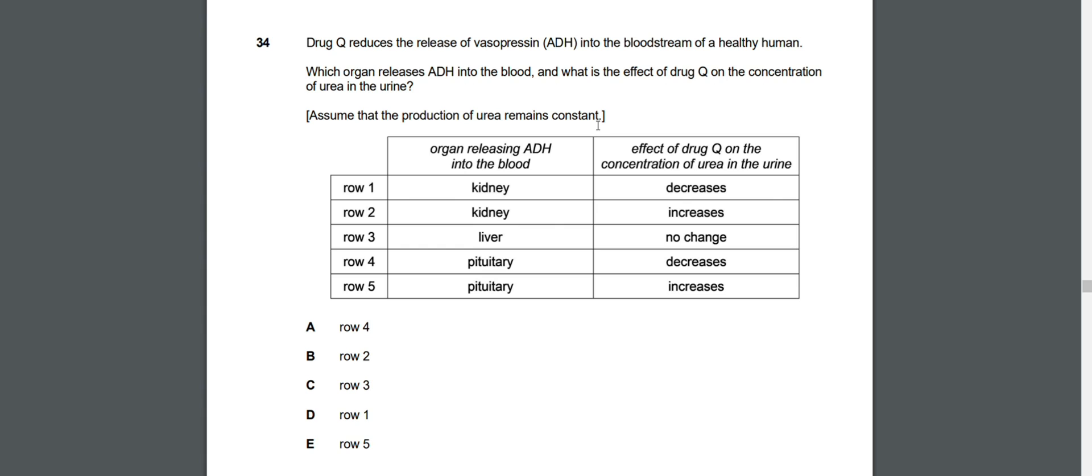Question 34: Drachio reduces the release of ADH into the bloodstream. Which organ releases ADH into the blood and what is the effect of Drachio on the concentration of urea in the urine? The answer is row 4. The organ that releases ADH into the blood is the pituitary - it's very important to know the basics of your endocrine system for the IMAT. The effect of Drachio on the concentration of urea in the urine decreases.